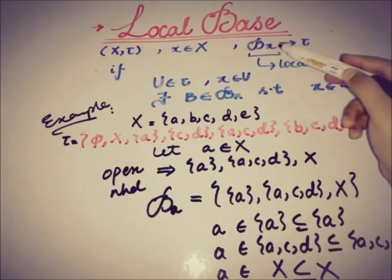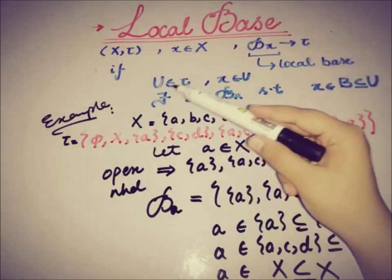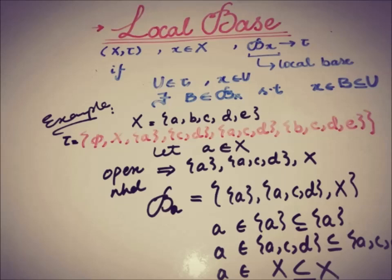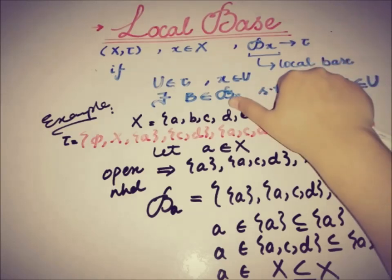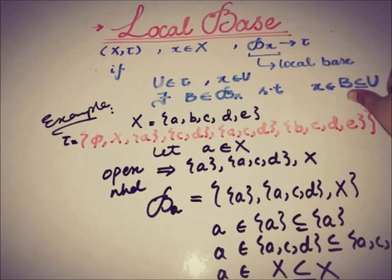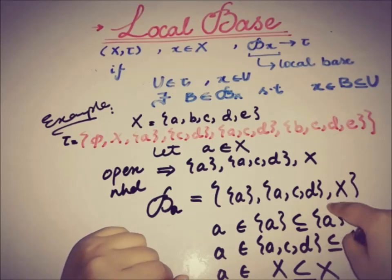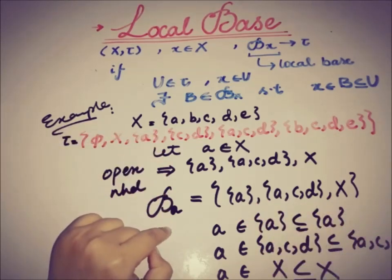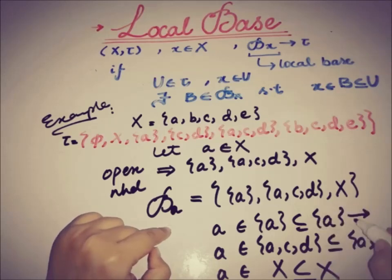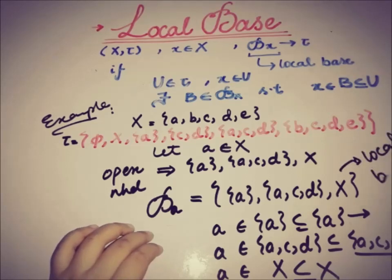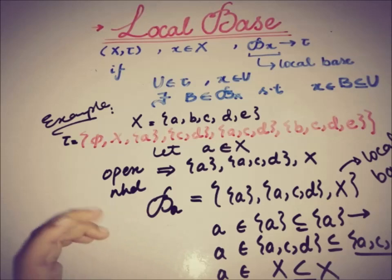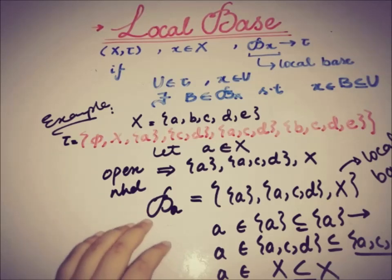The definition says the sub-collection is a local base if for any open set U that contains the point x, there exists a member B of the sub-collection such that x is part of B and B is a subset of U. Here {a}, {a, c, d}, and X are the B's — members of the sub-collection — and they are all open sets. This satisfies the definition of the local base, so this is a local base, or neighborhood base, at point a.